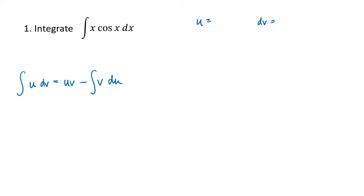Typically the way I suggest thinking about this is you want to make u be a function that gets simpler when you take its derivative, and dv be a function that doesn't get too much more complicated when you take its antiderivative. Functions tend to get more complicated when you take their antiderivatives, so you're looking for something that doesn't get too nasty.